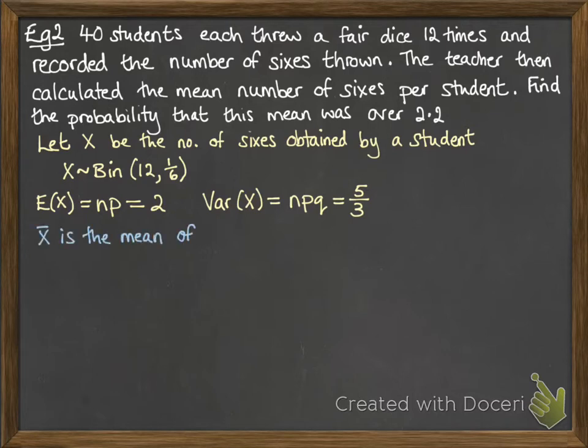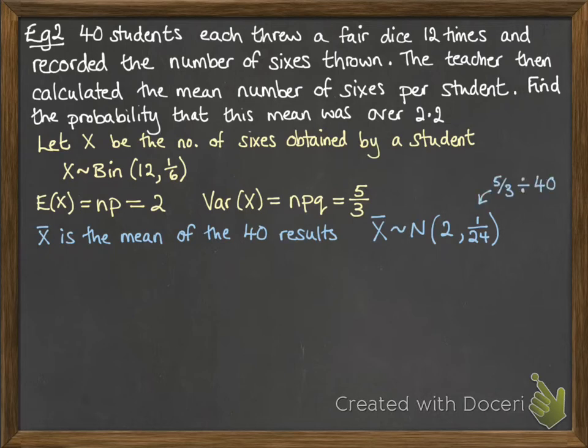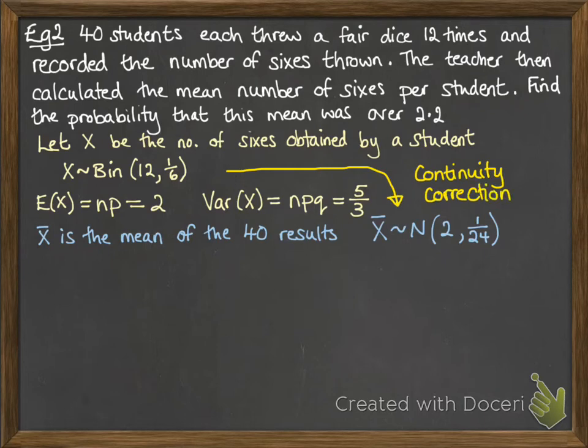X̄ is the mean of the 40 results, so the mean of our samples. X̄ then follows a normal distribution with mean 2 and variance 1.24. That variance comes from 5/3 divided by 40. Since we are going from a binomial into a normal distribution, we're going to need to apply a continuity correction. With the Central Limit Theorem, we work this out as 1/(2n).